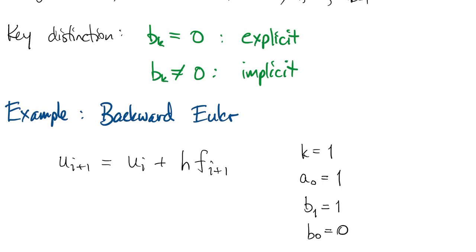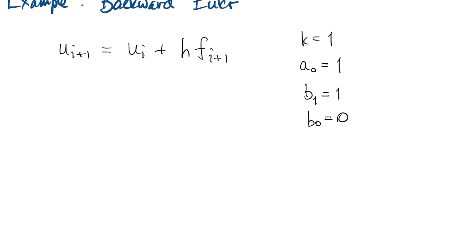But if we say what exactly this fi plus 1 means, then we see that ui plus 1, which is the thing we're trying to find at this time step, appears in two places. So to find it, we now have to solve this equation, which, depending on f, is probably a nonlinear equation.